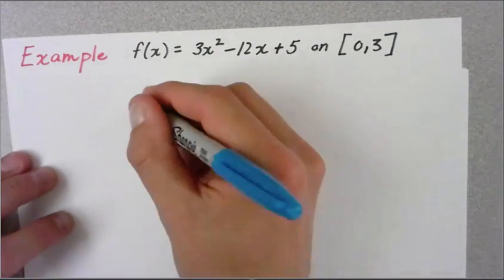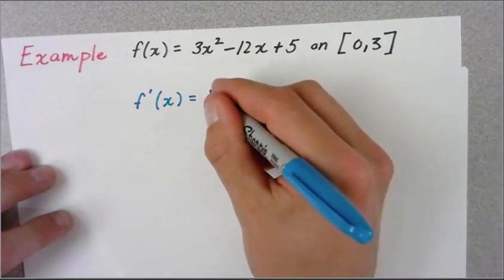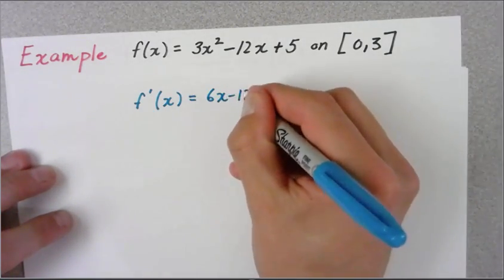The first thing I want to do is find the derivative. I'm going to go ahead and find that, and I get 6x - 12.